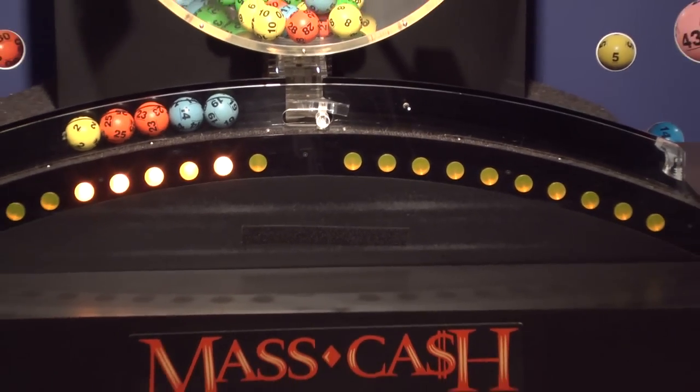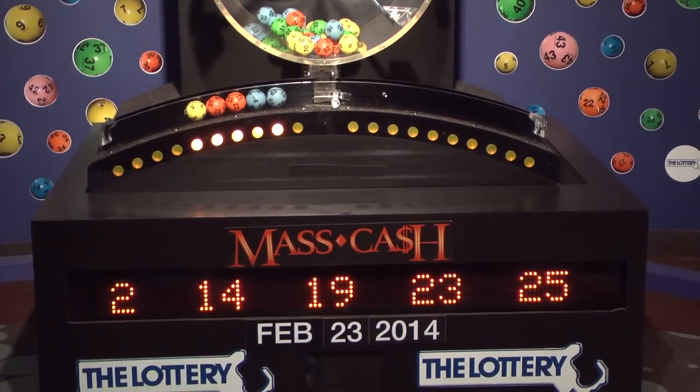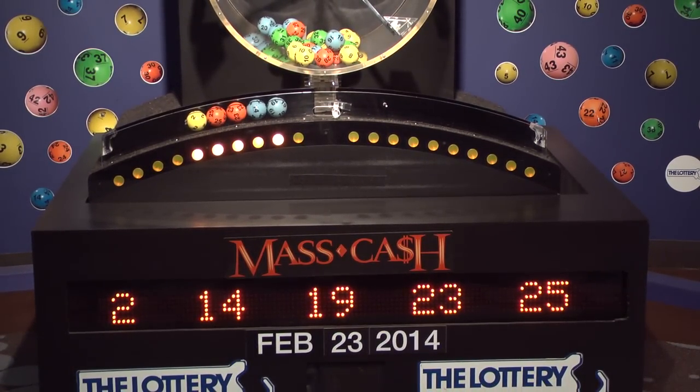Once again, the winning MassCash numbers for Sunday, February 23rd are 2, 14, 19, 23, and 25.